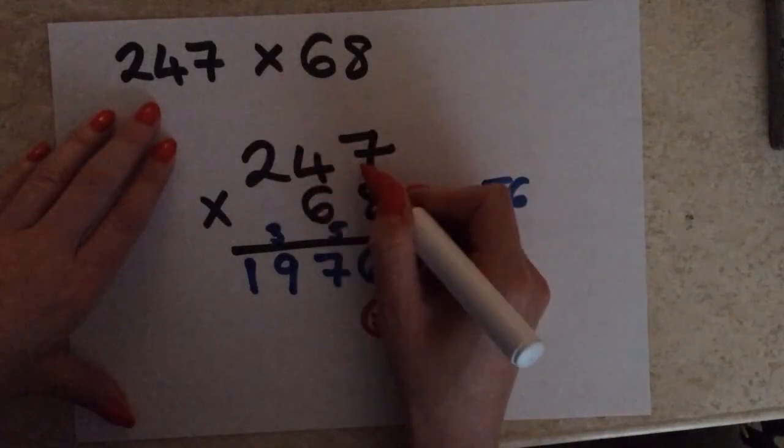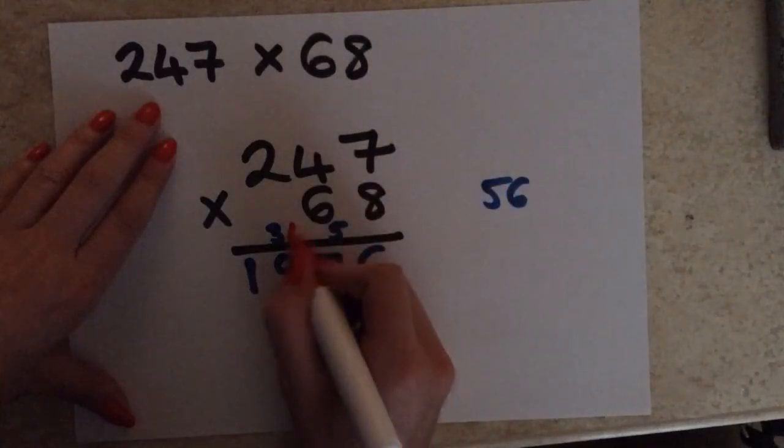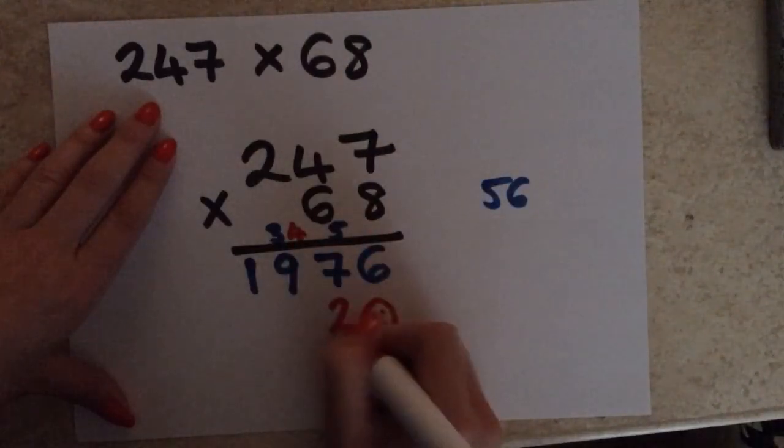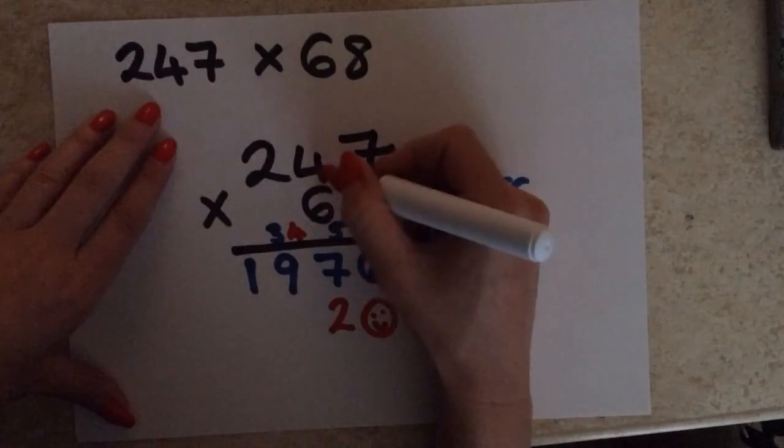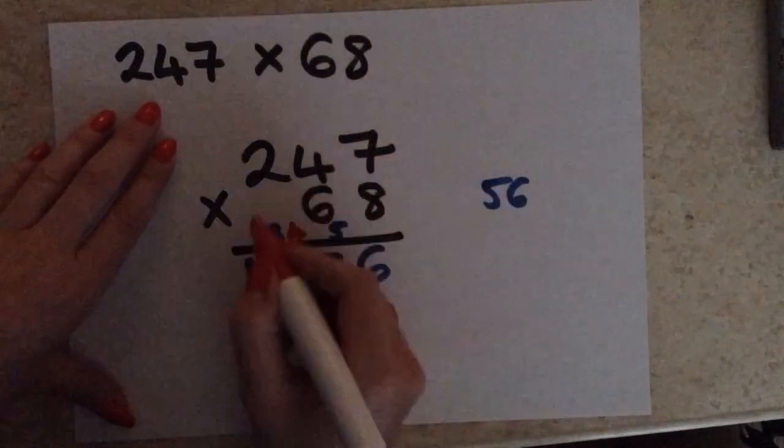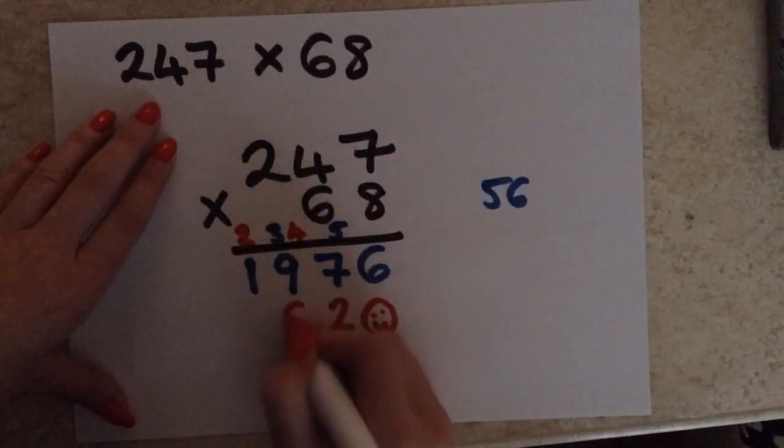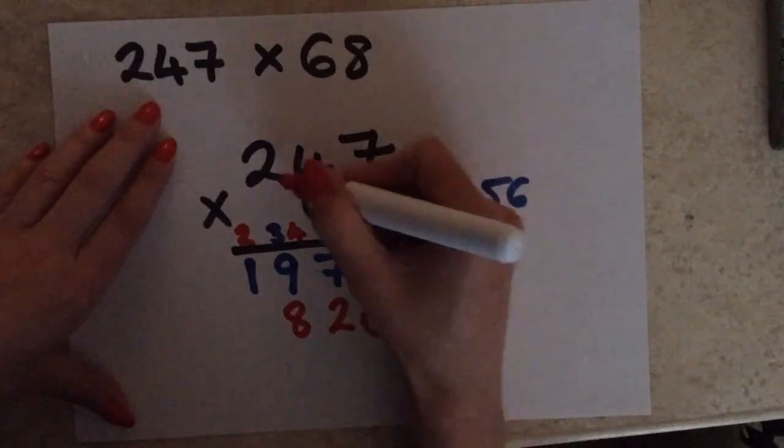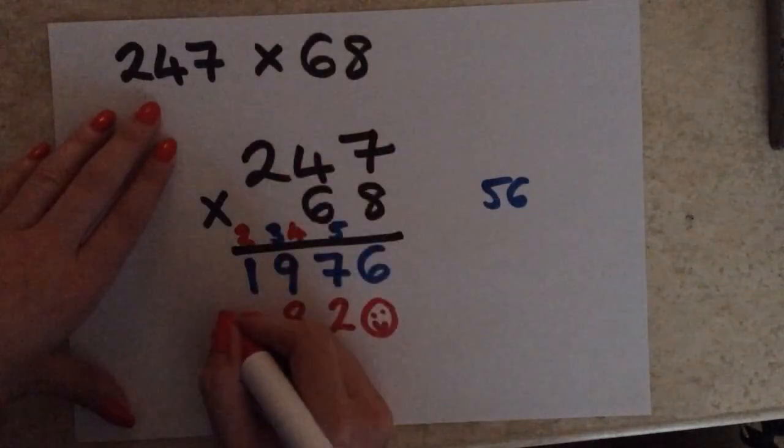So, 6 times 7 is 42. And then 6 times 4 is 24. Add the 4, that's 28. And then 6 times 2 is 12. Add the 2, 14.